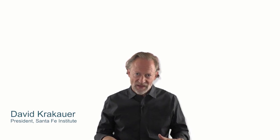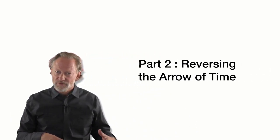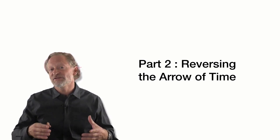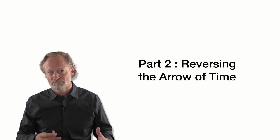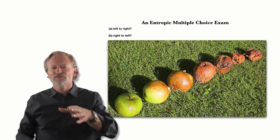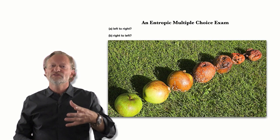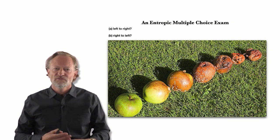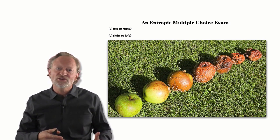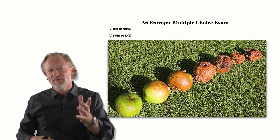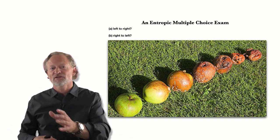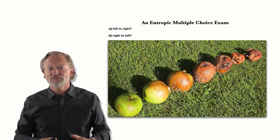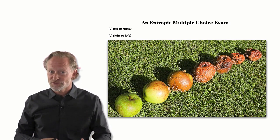The key to understanding a functionalist perspective on the origin of life is understanding the adaptive arrow of time. If I were to show you this slide and ask you which way does time flow — from left to right or right to left, from fresh to rotten or rotten to fresh — everyone would know the answer. That's because you have a basic intuition about the second law of thermodynamics: systems tend to become disordered in time.